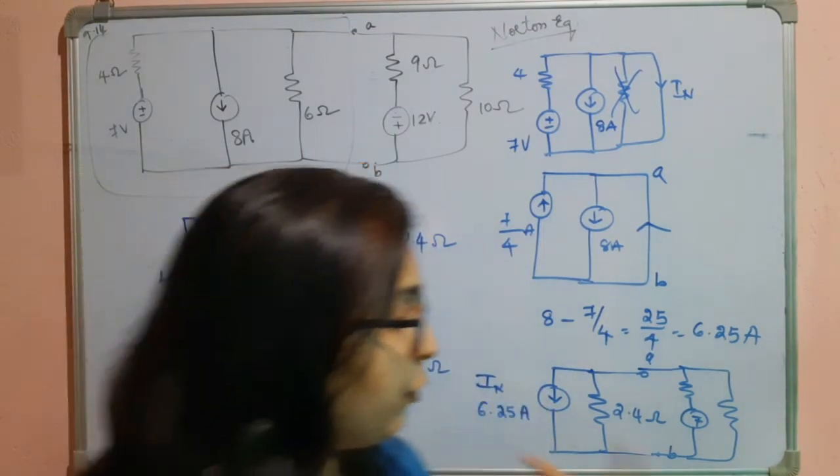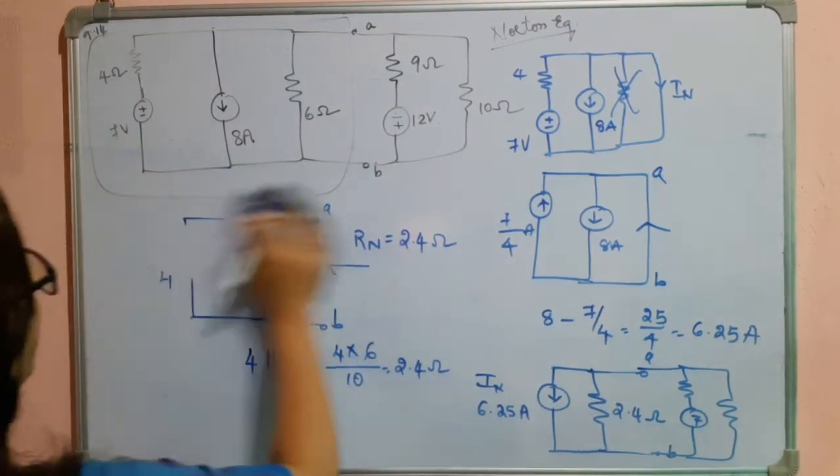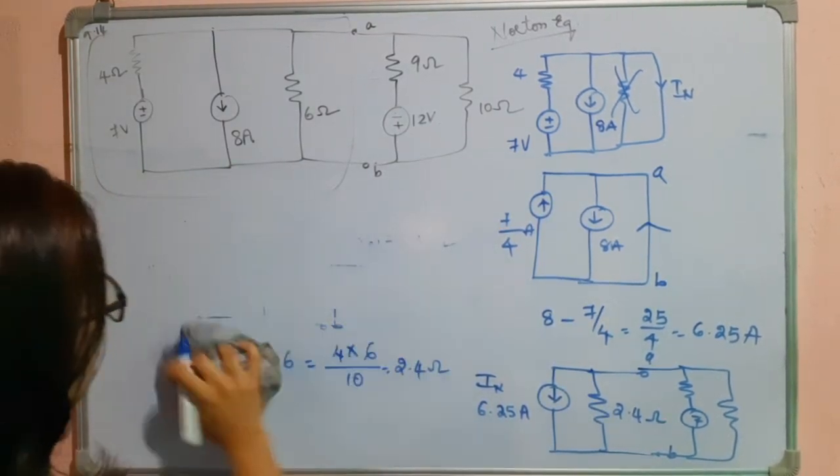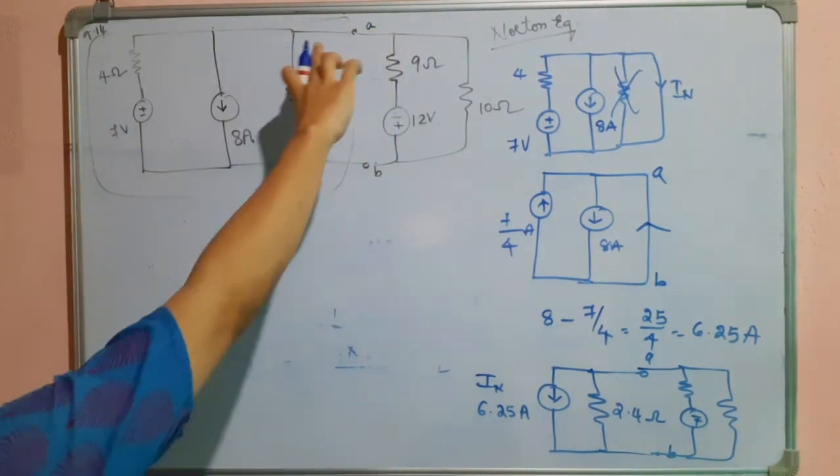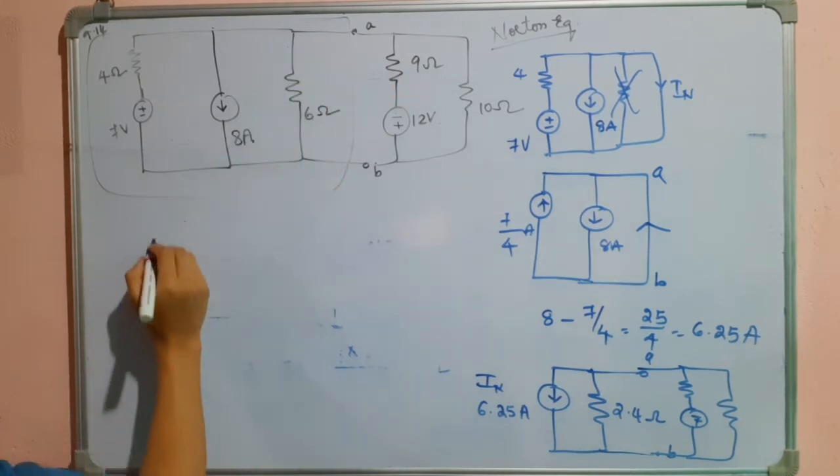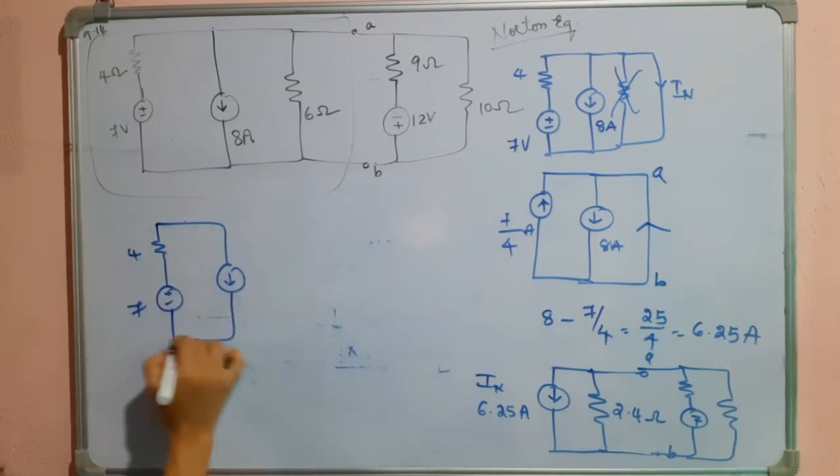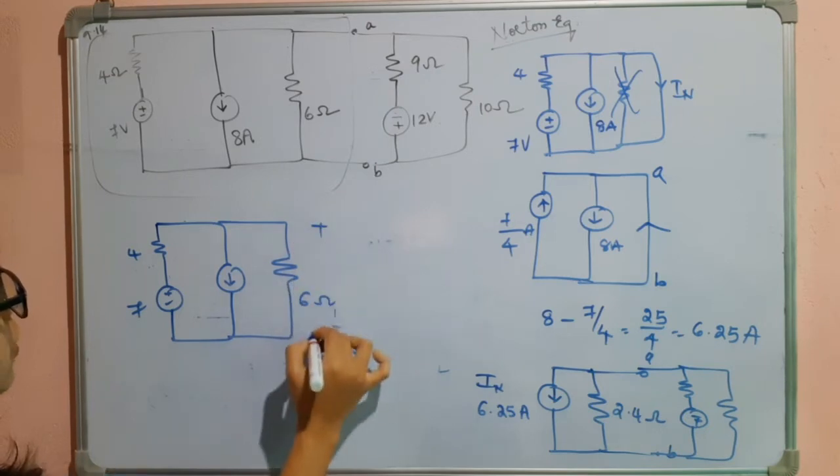Or else if you don't want to find the short circuited current, once again I will tell you, you can find the open circuit voltage across this particular thing. Open circuit voltage. So how will you find it out? See this one? It is 7, this is 4, this is 8 amperes, and here we have 6 ohms resistor. We have to find the voltage across this, that is Vth.